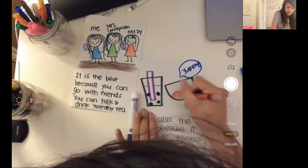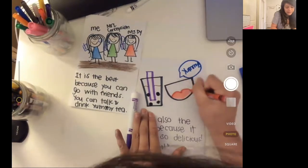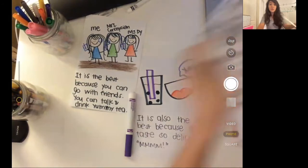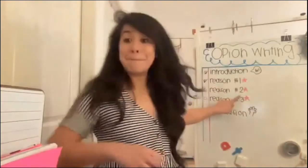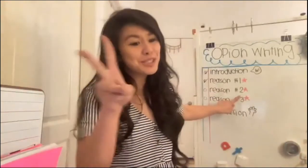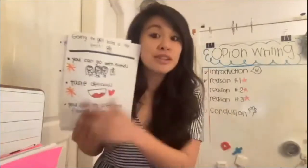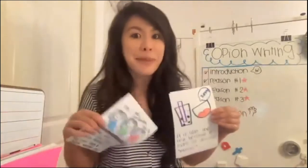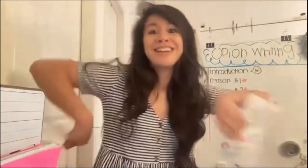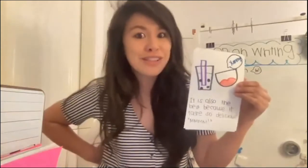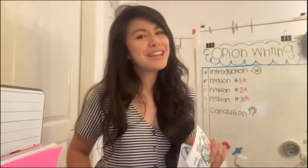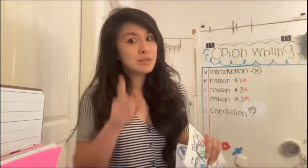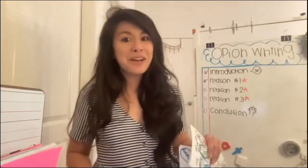I'm going to finish up coloring in a little bit, but I actually want you to try this out. Friends, today you are going to add reason number two to your book. Look at your brainstorm list, choose your second favorite reason, and add it to your book. Now I have two reasons why going to get boba is the best: first reason — because you can go with friends; second reason — because it tastes so delicious. Now it's your turn! Go ahead and add your reason number two. I'm looking forward to seeing what you chose. All right writers, I'll see you tomorrow, bye!